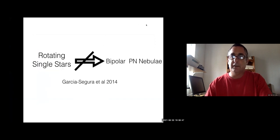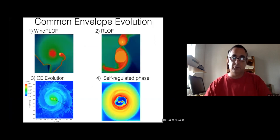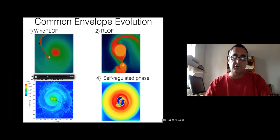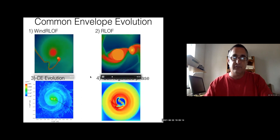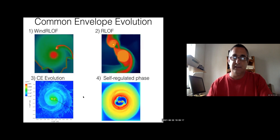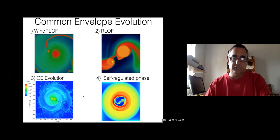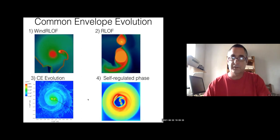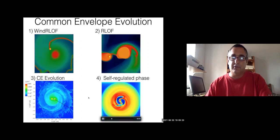To start with, we already agree in the community that a rotating single star cannot afford bipolar planetary nebulae on its own. So we need another way to redistribute the angular momentum into the equator. We know that common envelope evolution can do this for us. After a wind Roche lobe overflow phase, we have common envelope evolution and then a self-regulative phase. In these two sections, we are going to calculate the ejecta.